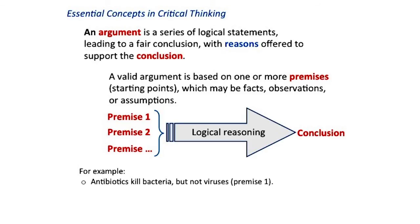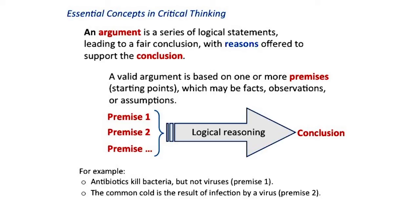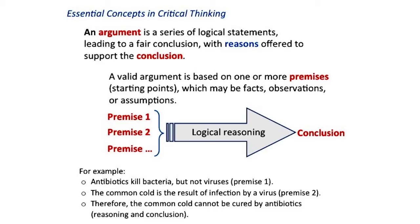Here is an example of a simple argument. We know that antibiotics are effective in killing bacteria, but they are not effective against viruses — that's our first premise. We also know that the common cold is caused by a viral infection, not a bacterial infection — that's our second premise. From these starting points we can conclude, therefore, that antibiotics will not be effective in curing the common cold. Because we can be confident that both our premises are correct and the logic that links them to the conclusion is correct, then we can also be confident that the argument is a valid one.